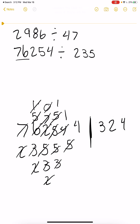So if I do 1,054 minus the 940, that is 114. And since 235 can't go into 114, our answer would be remainder 114. So the answer would be 324, remainder 114.